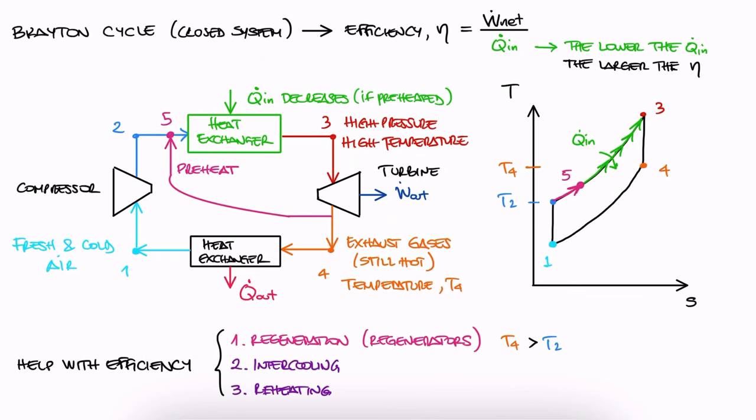This is what the regenerator does. Takes heat from 4 and transfers as much as it can to 2, so that Q in is not as high as it would've needed to be. As you can probably already tell, a regenerator is nothing more than just a heat exchanger. The regenerator brings in the hot gases from 4 and the cooler gases from 2 and allows them to exchange heat.